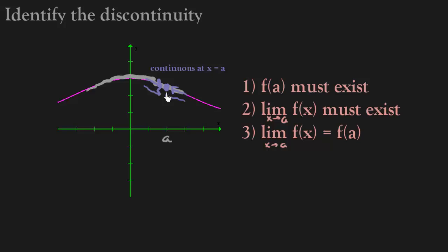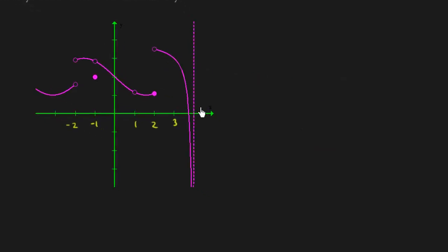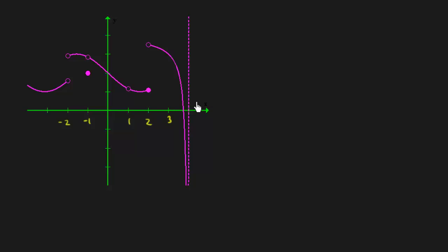Okay, so now let's take a look at a graph. With this graph we're going to do two things: identify the discontinuities as well as officially give the discontinuities a name. So let's start from the left and work our way to the right, identifying any problems along the way.